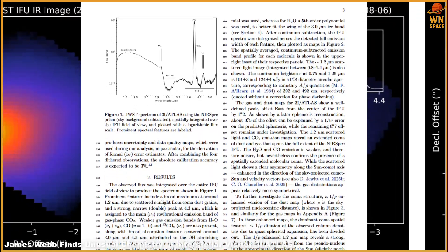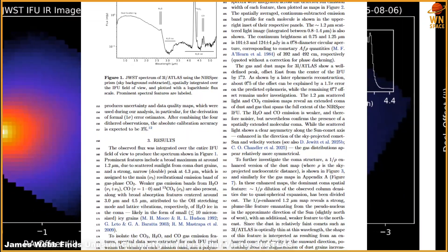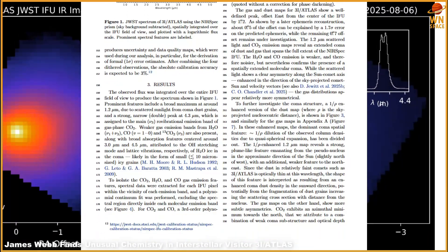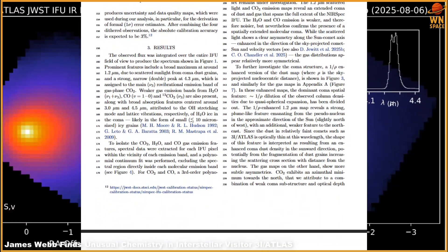The comet's coma is rich in carbon dioxide, along with water vapor, carbon monoxide, carbonyl sulfide, dust grains, and even isotopic variants like CO2.